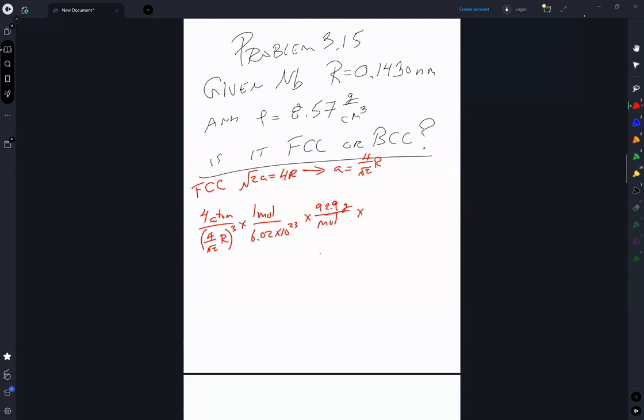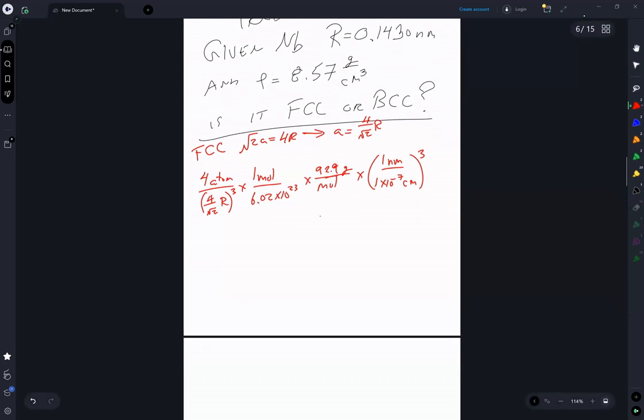Times 1 nanometer per 1 times 10 to the minus 7 centimeter quantity cubed. And doing that, we get 9.32 gram per centimeter cubed.